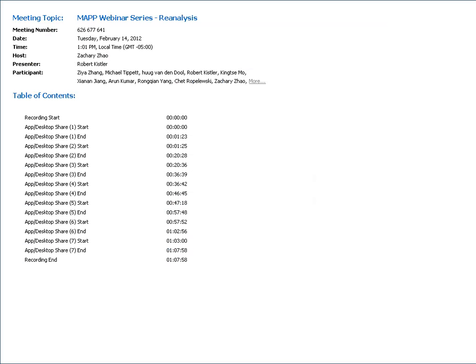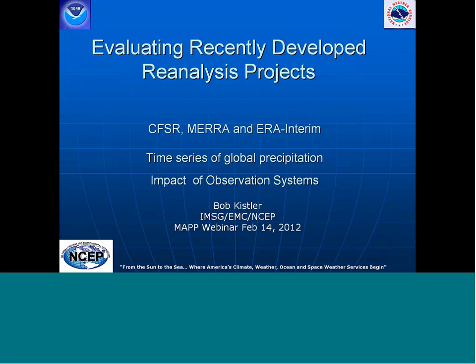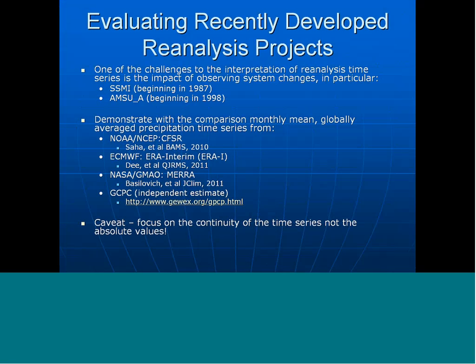We're going to compare the three reanalyses — CFSR, MERRA, and ERA-Interim — looking at the global time series of global precipitation, and we'll look at the impact of observing systems, which will lead into an introduction to the follow-up system to CFSR. One of the challenges to interpreting reanalysis time series is the impact of observing system changes. The two I want to focus on are the introduction of SSM/I in 1987 and AMSU-A, also called ATOVS, beginning in October 1998. We'll demonstrate this with comparison of monthly mean globally averaged precipitation time series from CFSR, ERA-Interim, ERA-40, MERRA, and an independent estimate from GPCP. The caveat: don't focus on absolute values, but focus on the discontinuities in the time series.